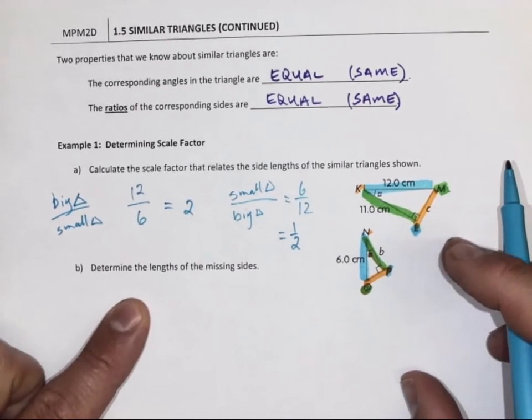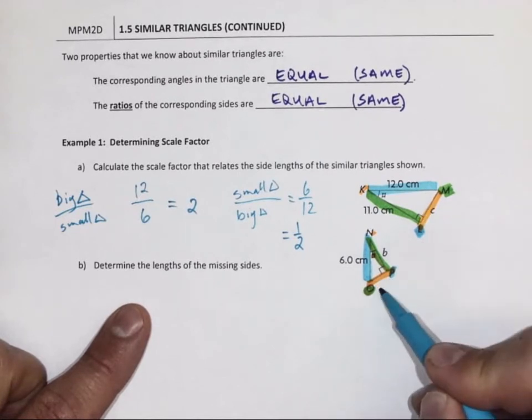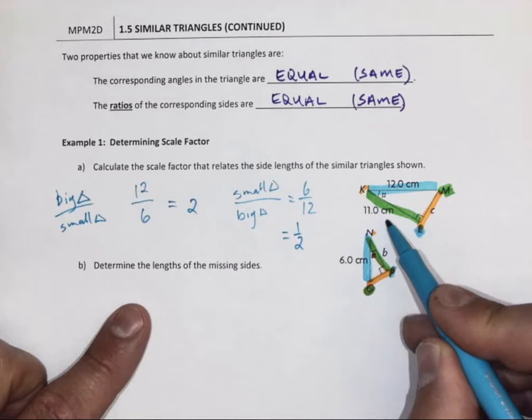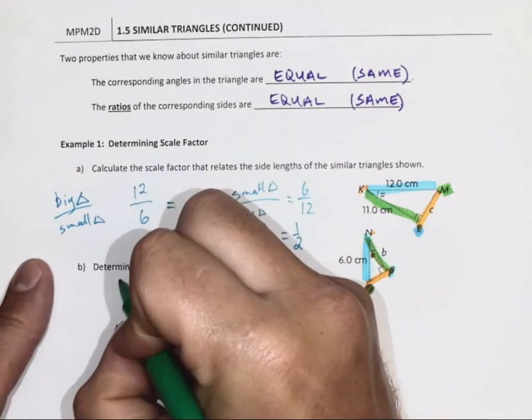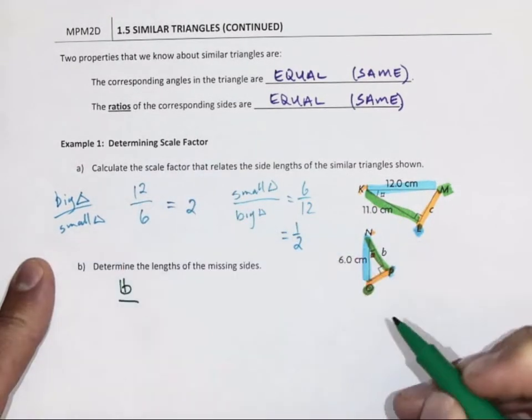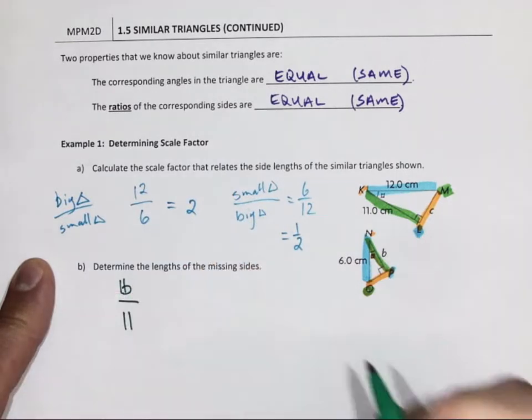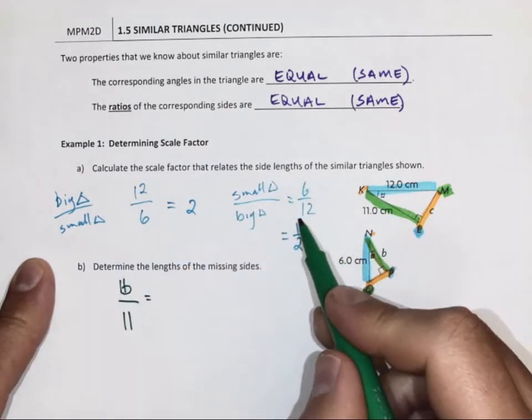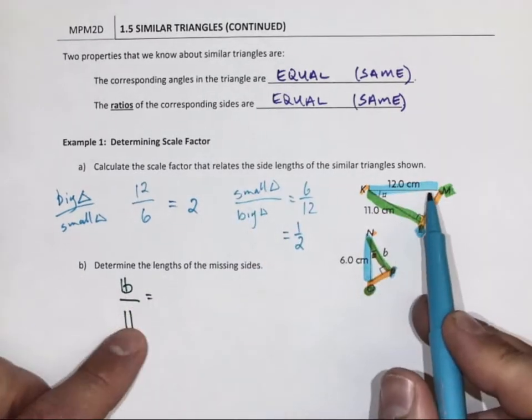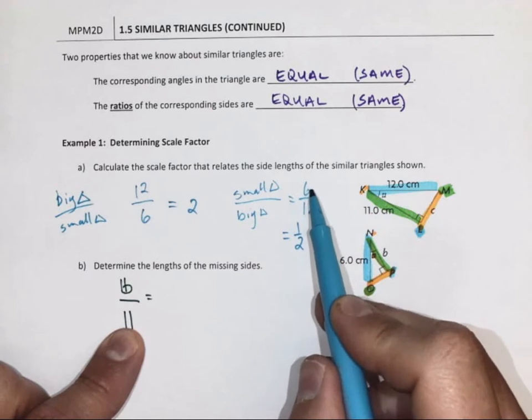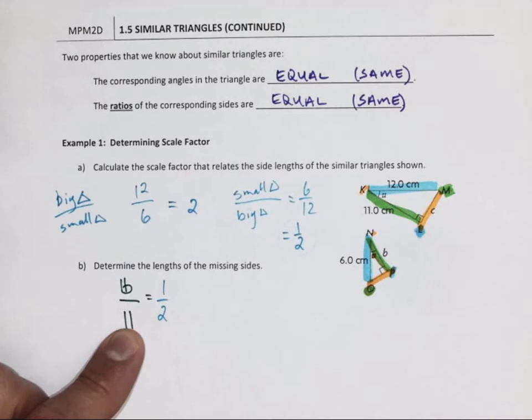Determine the missing sides. So I got C, I don't know what that is there, but I got 11 and B. So let's see. Again, I can choose. So I'm going to put B on top. So small triangle divided by big triangle, and that's going to equal my scale factor which I found of one half. Because I did small triangle to big triangle.